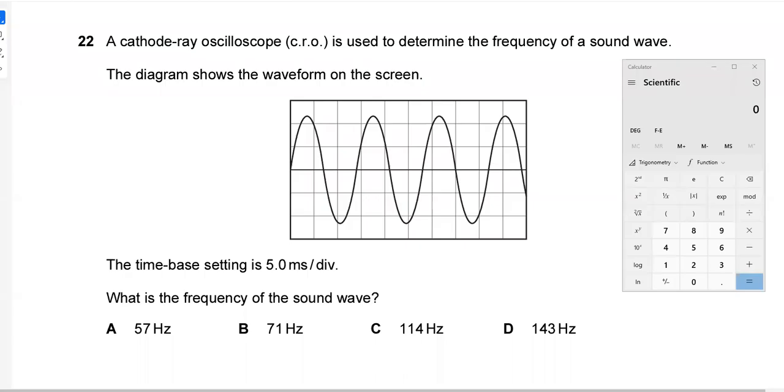Hello and welcome. In this worked example, we'll be working through a cathode ray oscilloscope question. The question reads: a cathode ray oscilloscope is used to determine the frequency of the sound wave. The diagram shows the waveform on the screen. The time-based setting is 5.0 milliseconds per division. What is the frequency of the sound wave?